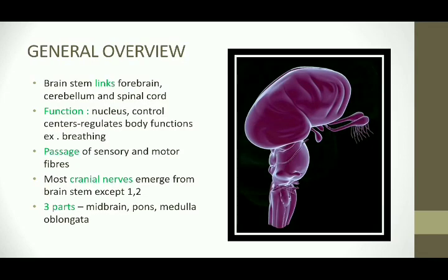The brainstem forms a link between the cerebrum, cerebellum and the spinal cord. Its main function is to control various bodily functions. The medulla oblongata consists of various control centers which control involuntary processes such as respiration. Except the first and second cranial nerves, all the other 10 cranial nerves arise mainly from the three parts of the brainstem: midbrain, pons and the medulla.